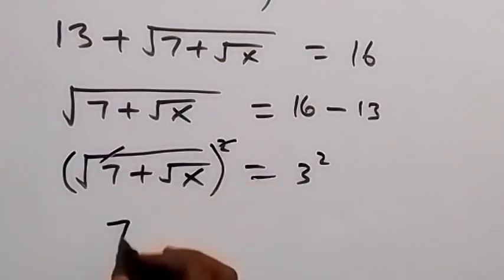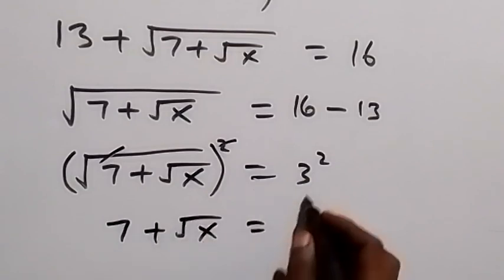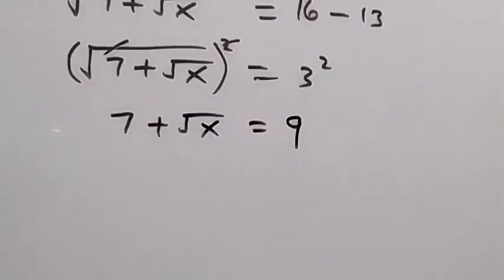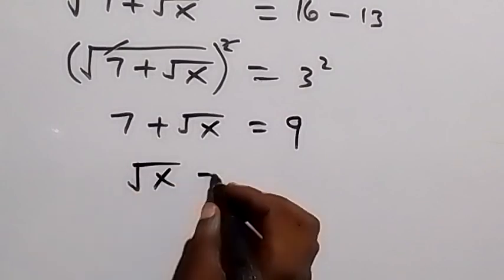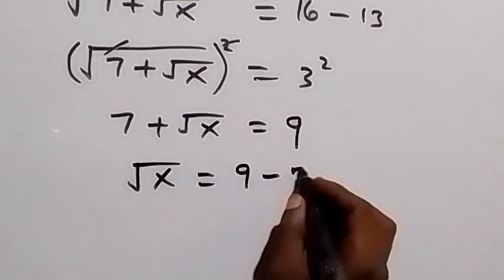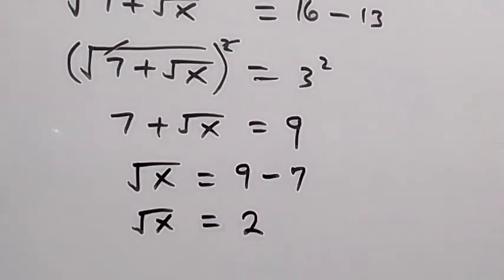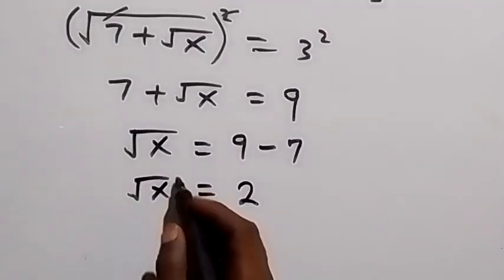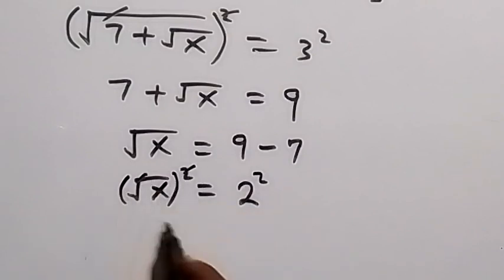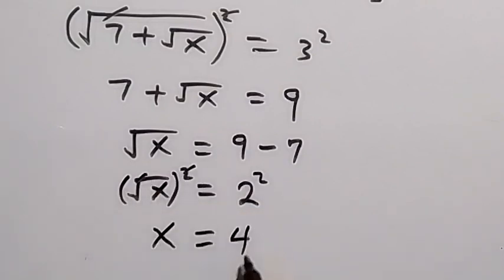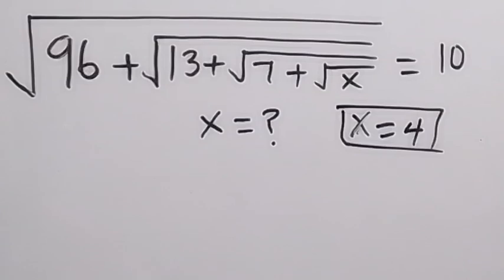Squaring removes the square root, meaning 7 plus square root of x equals 3 squared, which gives us 9. We can take 7 to this side, so root x equals 9 minus 7, which gives us 2. Then we square both sides: squaring cancels the square root, and x equals 2 squared, which is 4. So we get the value of x to be 4.